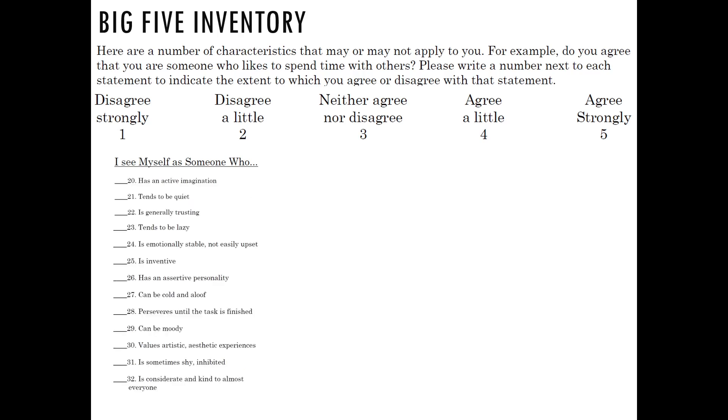Now number 20: has an active imagination. Twenty-one: tends to be quiet. Twenty-two: is generally trusting. Twenty-three: tends to be lazy. Twenty-four: is emotionally stable, not easily upset. Twenty-five: is inventive. Twenty-six: has an assertive personality. Twenty-seven: can be cold and aloof. Twenty-eight: perseveres until the task is finished. Twenty-nine: can be moody. Thirty: values artistic, aesthetic experiences. Thirty-one: is sometimes shy, inhibited. Thirty-two: is considerate and kind to almost everyone.